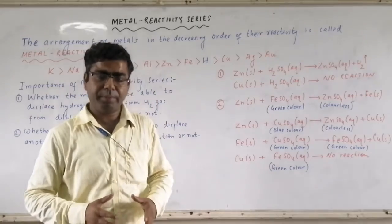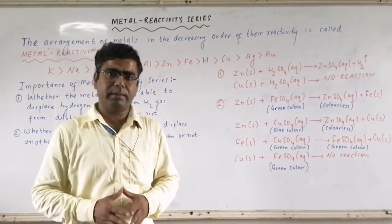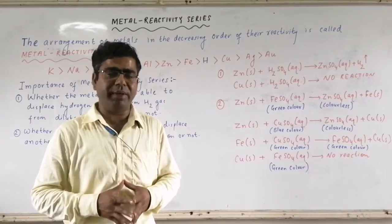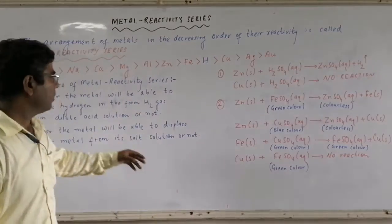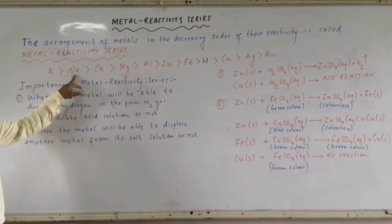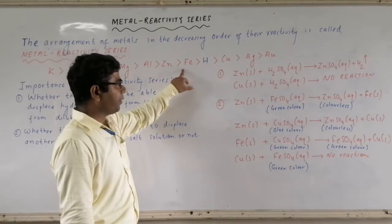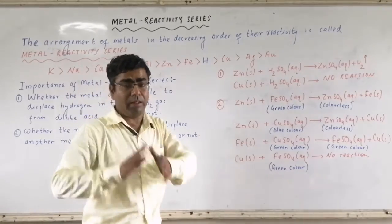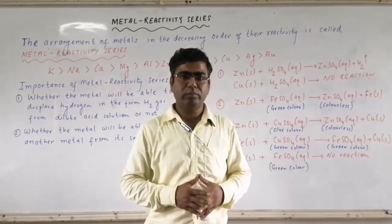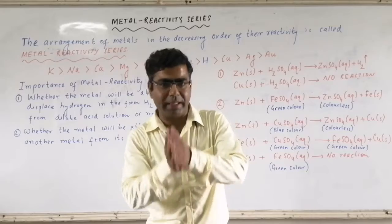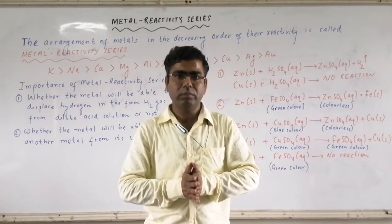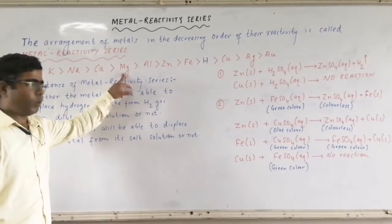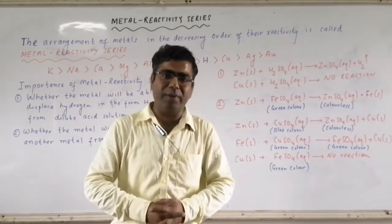I have arranged a few important metals in decreasing order of reactivity to obtain the metal reactivity series. The order is: potassium, sodium, calcium, magnesium, aluminium, zinc, iron, hydrogen, copper, silver, and gold. If a metal is present on the left-hand side, it will be more reactive than the metal on the right-hand side. For example, calcium is more reactive than magnesium because it is located to the left in the series.